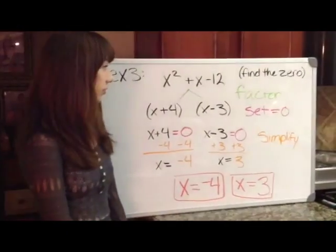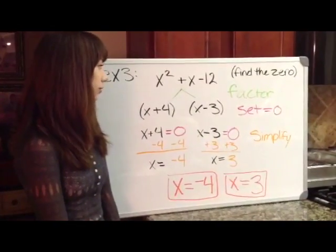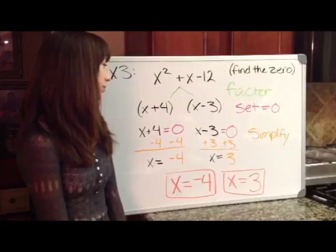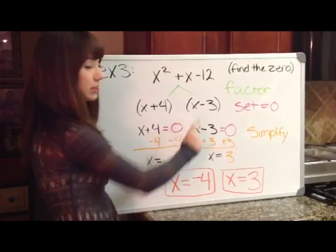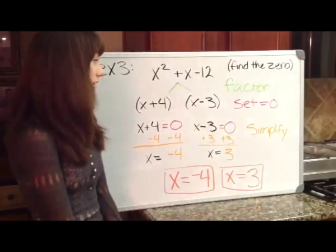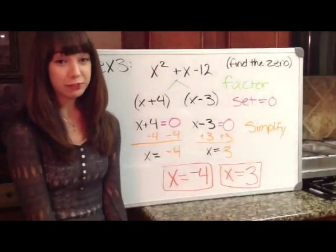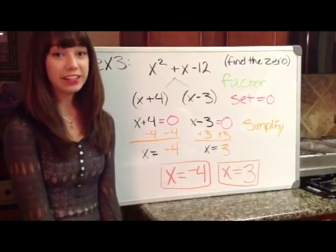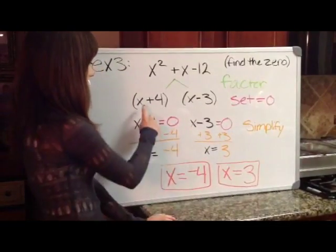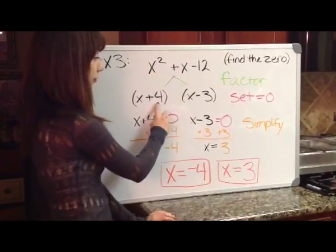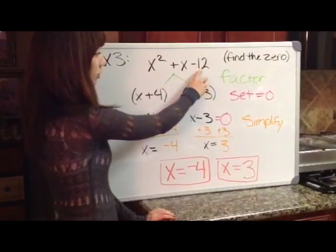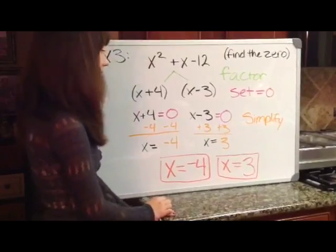For example 3, we have x squared plus x minus 12. Our first step is to factor and we get x plus 4 and x minus 3. You could either find that out by using the quadratic formula or you could easily look at it and do it in your head. Because if you look, x times x will get you x squared and 4 times negative 3 will get you that negative 12. But you have to be careful with the signs.